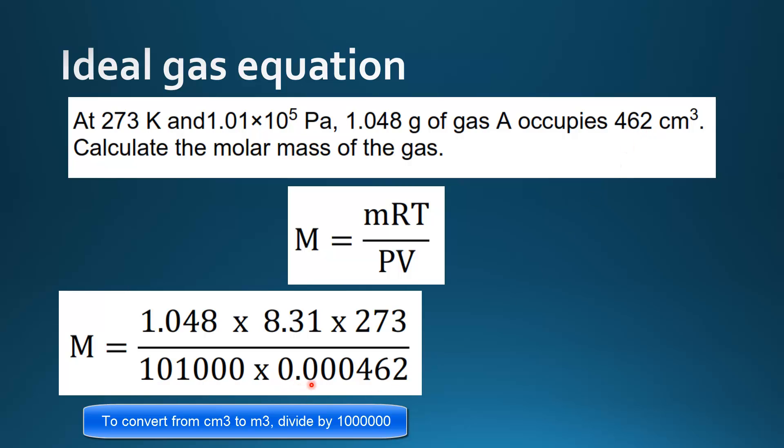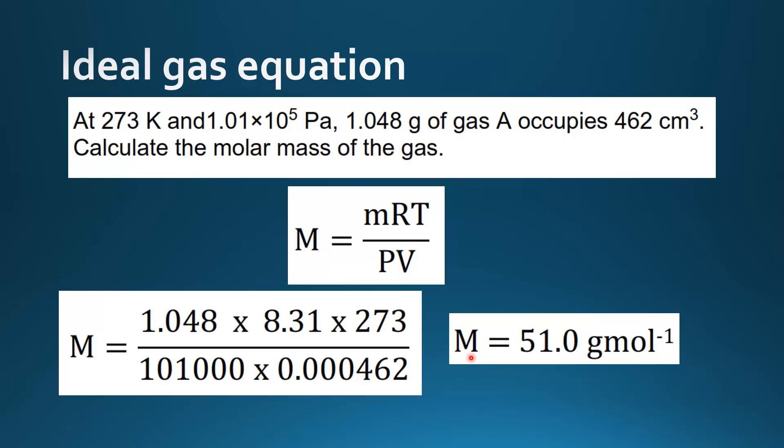That gives us 0.000462 meters cubed. And when we do the math, we end up with M molar mass equals 51.0 grams per mole. So that's all.